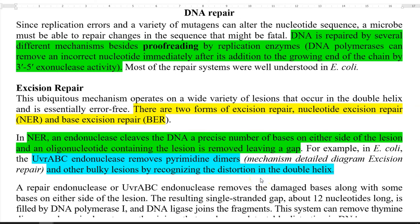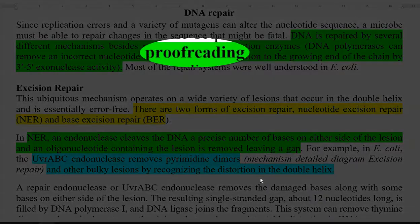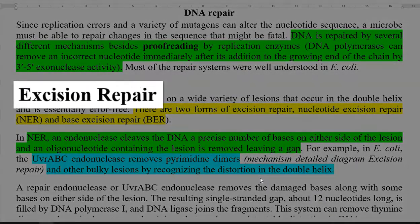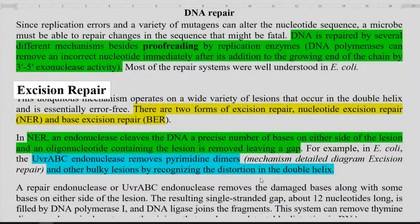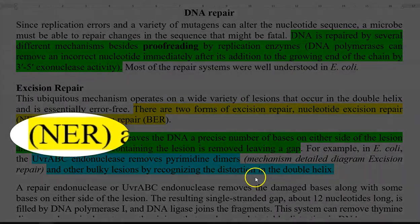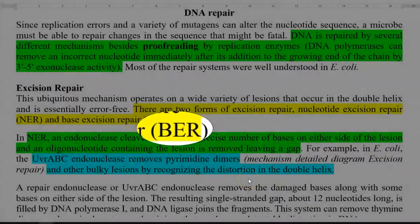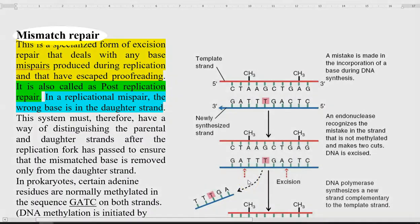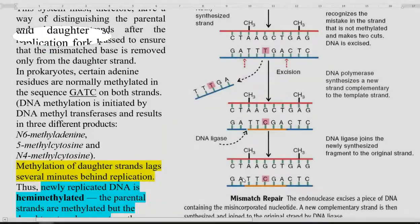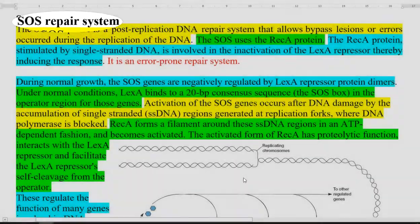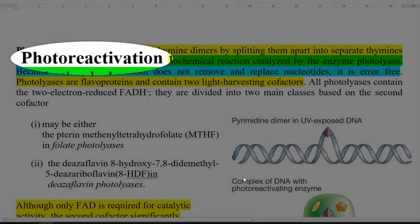In this screencast lecture, we are going to see the various DNA repair mechanisms that have been existing in an organism. The main DNA repair mechanisms include the proofreading capacity of the DNA polymerase enzyme and the excision repair systems. This excision repair system includes nucleotide excision repair and base excision repair. The next important mutation repair system is the mismatch repair system. Other systems include the SOS repair system and photoreactivation.